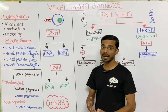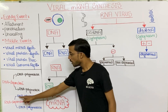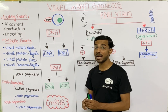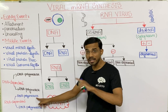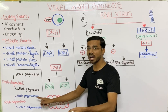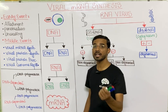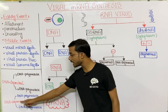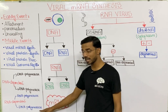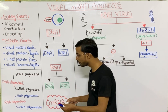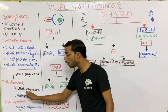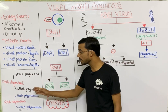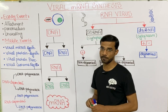Next is the RNA dependent category. RNA dependent RNA polymerase means they form RNA from RNA — that is why they are called RNA dependent RNA polymerase. And next is the RNA dependent DNA polymerase, which forms DNA from RNA.